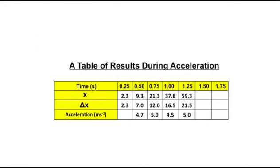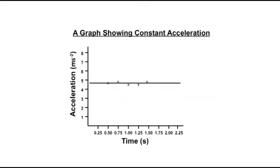Draw a table listing the time intervals against the distance travelled during each time interval, and calculate the acceleration for each time interval. Now plot a graph of time versus acceleration, and this will show the graph for constant acceleration.